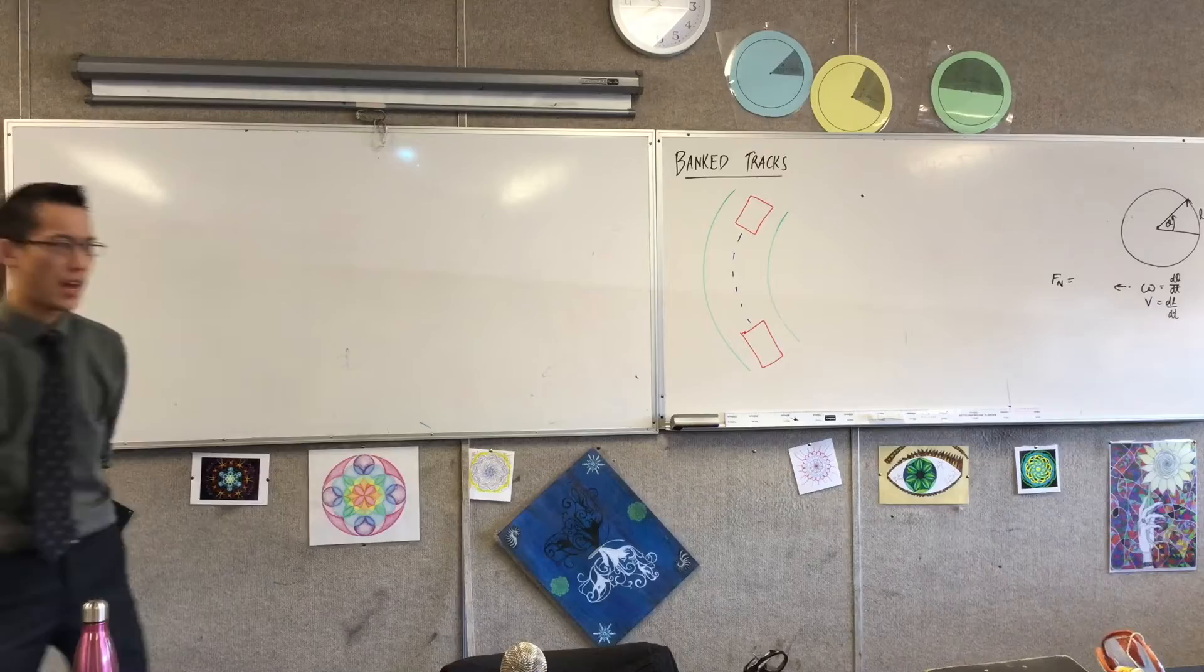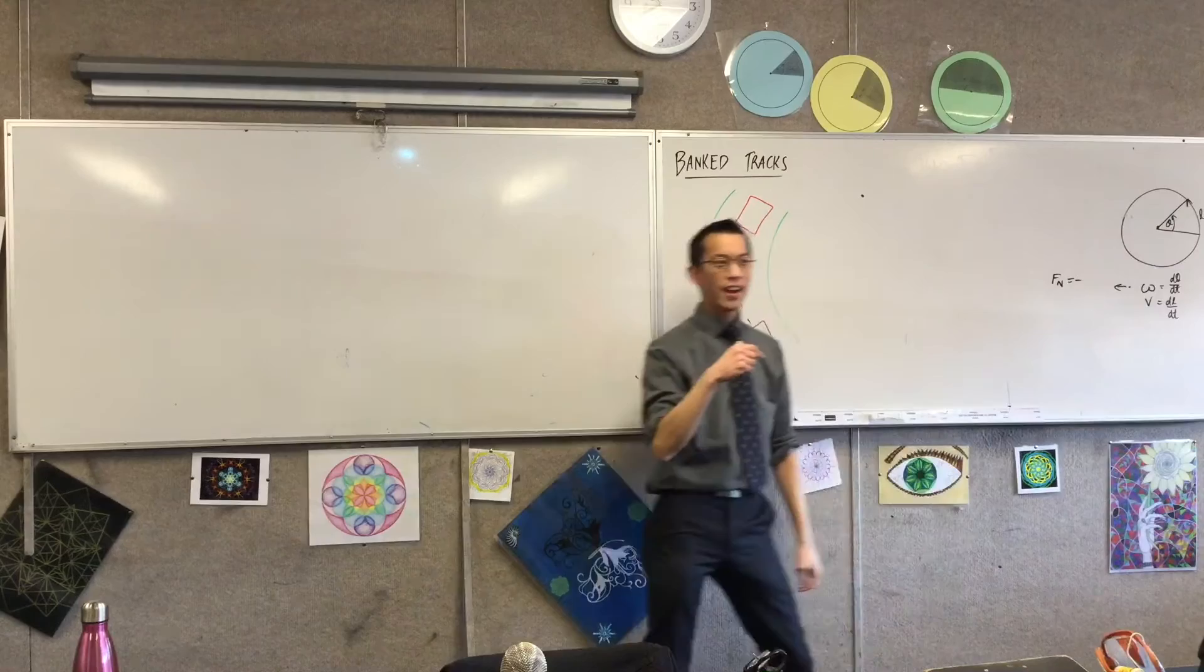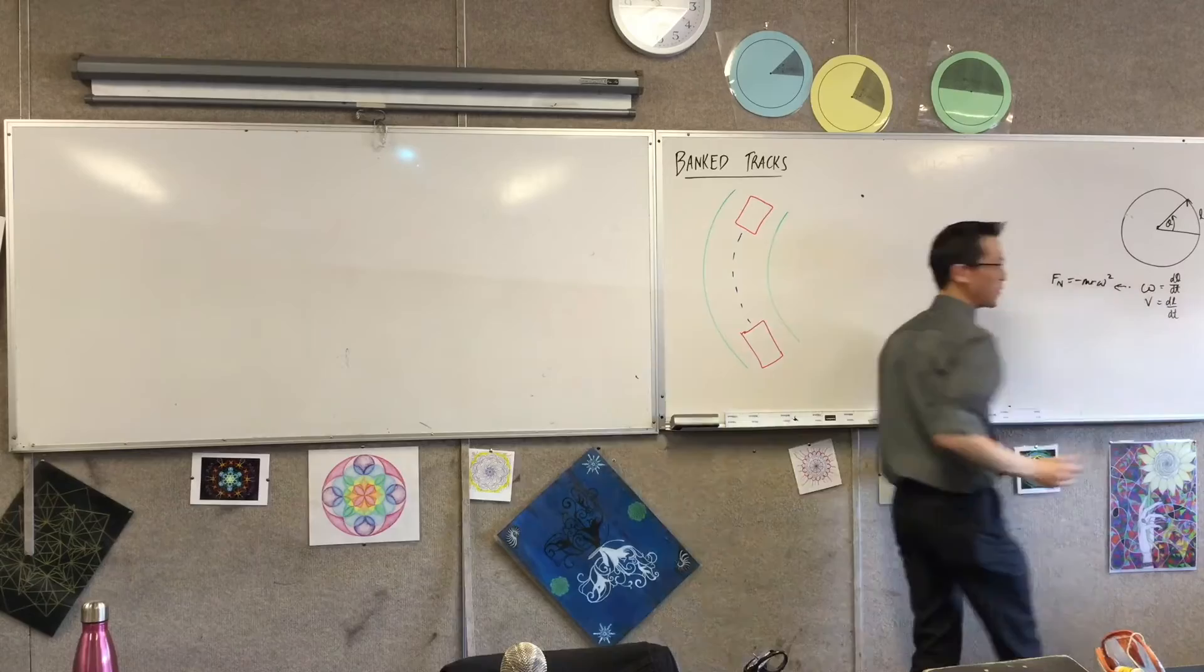It's negative, I'll give it to you. It starts with a negative because it's toward the center. M omega squared R. It's not a double R. Very good.